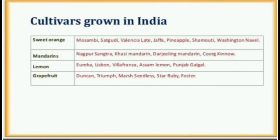Cultivars grown in India — Sweet Orange: Mossambi, Sadgudi, Valencia Late, Chaffa, Pineapple, Shamoti, Washington Navel. Mandarin: Nagpur Mandarin, Sangtra, Khasi Mandarin, Darjeeling Mandarin, Coorg Kino. Lemon: Eureka, Lisbon, Villa Franca, Assam Lemon, Punjab Galgal. Grapefruit: Duncan, Triumph, Mars Seedless, Starbright, Foster.